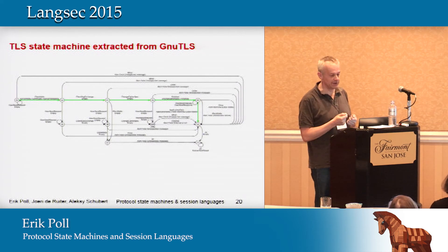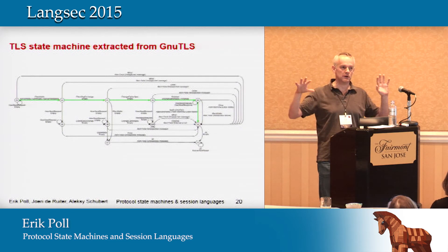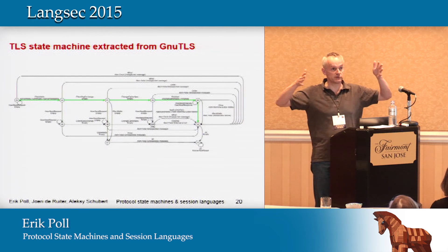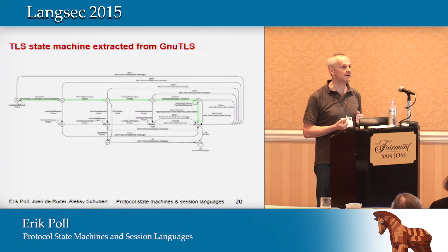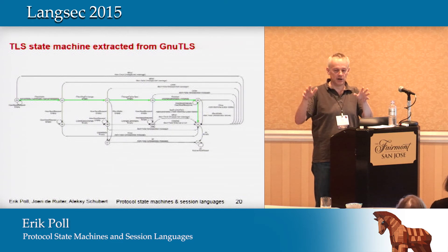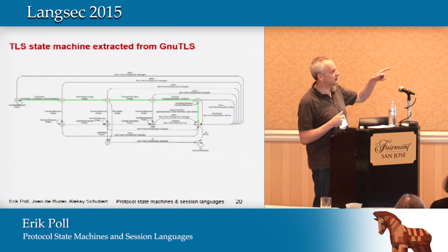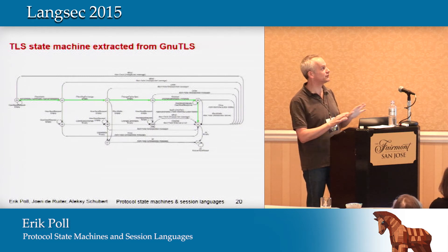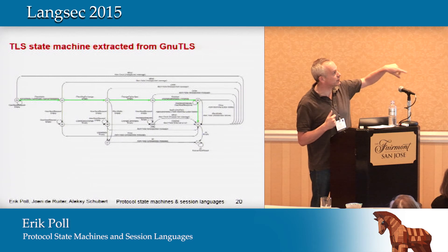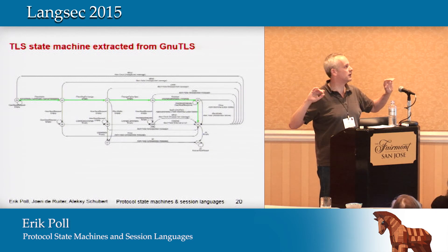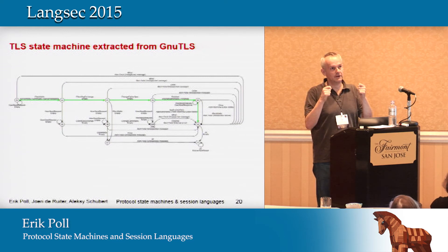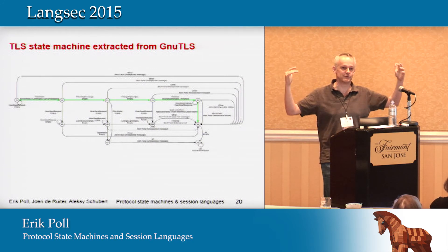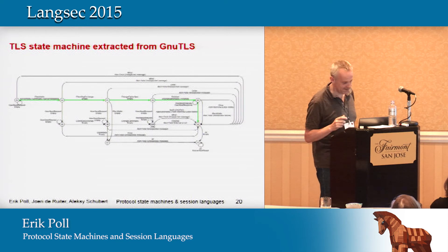GNU-TLS looks very different. We discovered a funny bug in GNU-TLS. TLS has a nice trick where after the handshake, both parties compute a hash over the entire handshake — all the sequences of handshake messages — and send this to each other to verify the handshake was successful, ruling out man-in-the-middle attacks because both have seen the same hash. We found that the buffer used to compute this hash is also used by the heartbeat functionality. So if you send a heartbeat during the key exchange, you can actually corrupt this value.